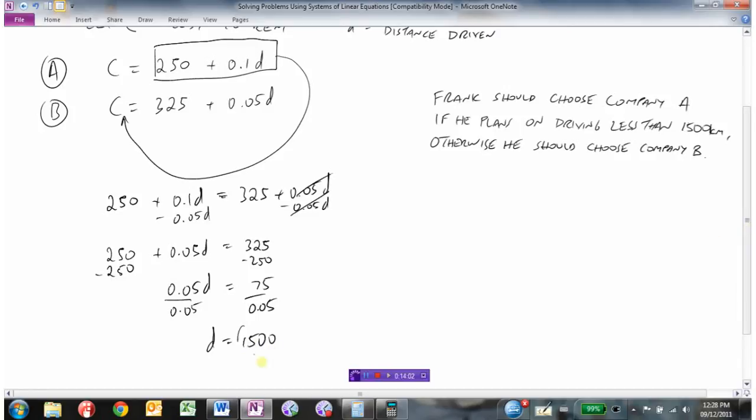Then we can take this and substitute it back into this equation to get our cost. We just found out that D was 1500. If we did this, we would get 250 plus 0.1 times 1500 is 150, and there's our 400. So what we found out is if you pay $400, both companies would be the same if you drove 1500 kilometers.